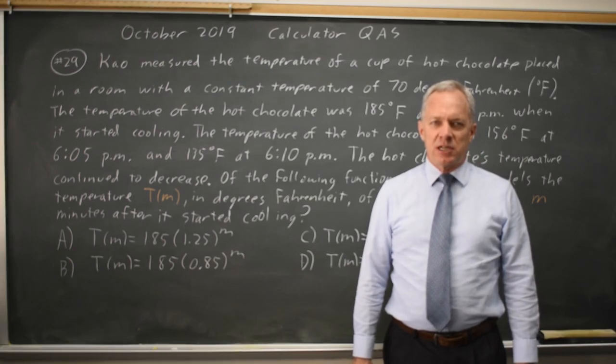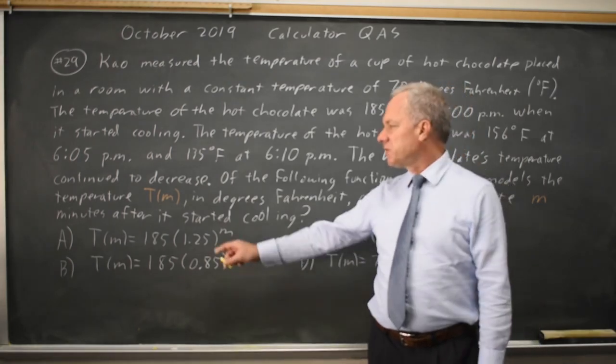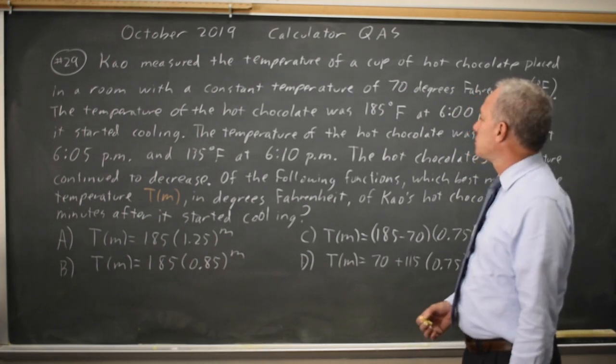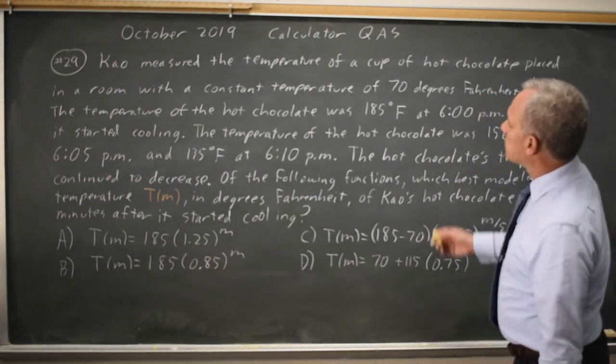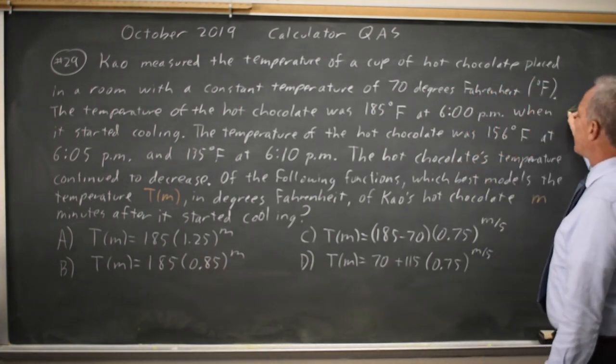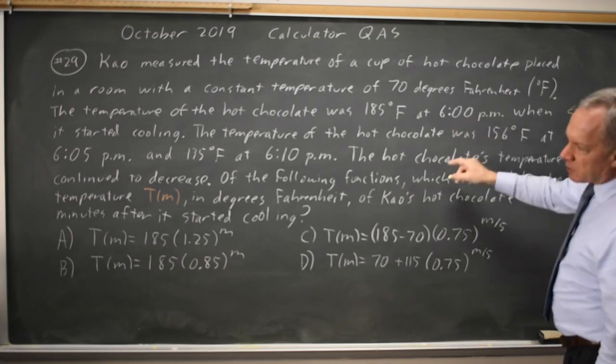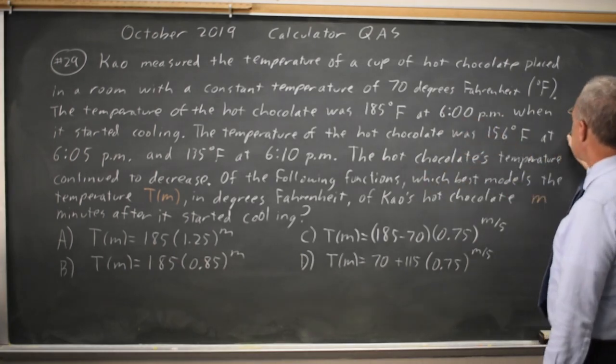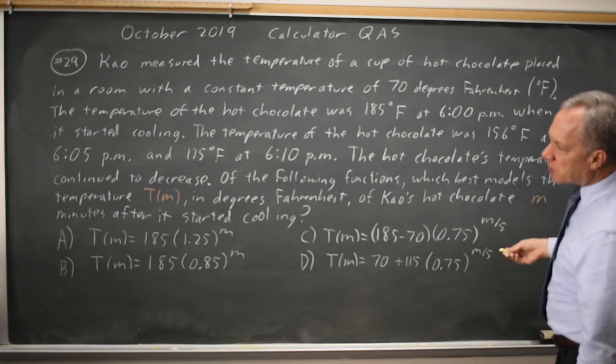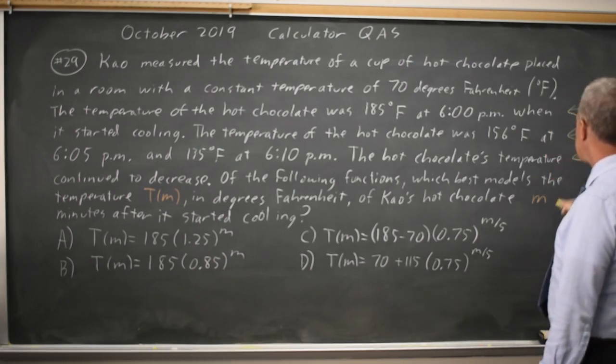This is question 29. College Board is asking which equation best models the temperature of hot chocolate that starts out at 185 degrees Fahrenheit at 6 p.m., then 156 at 6:05, and 135 degrees Fahrenheit at 6:10 p.m.